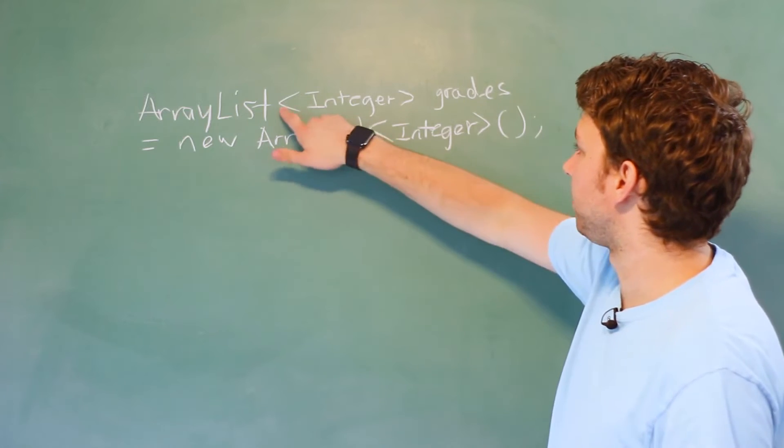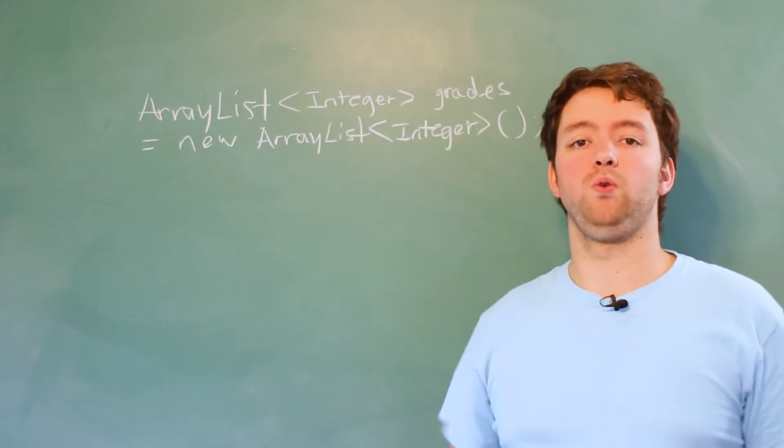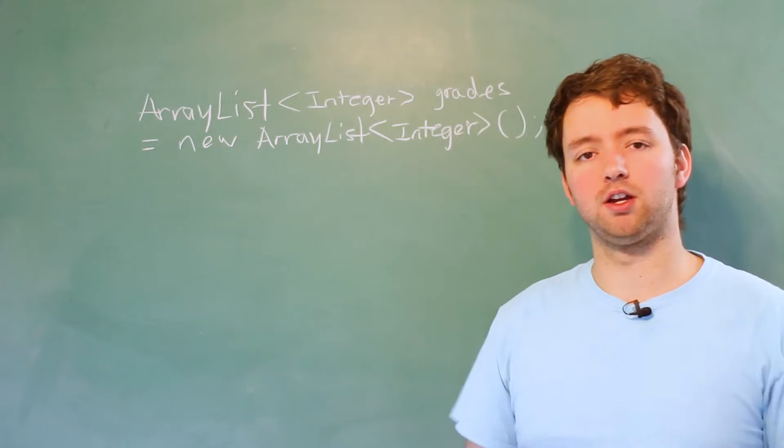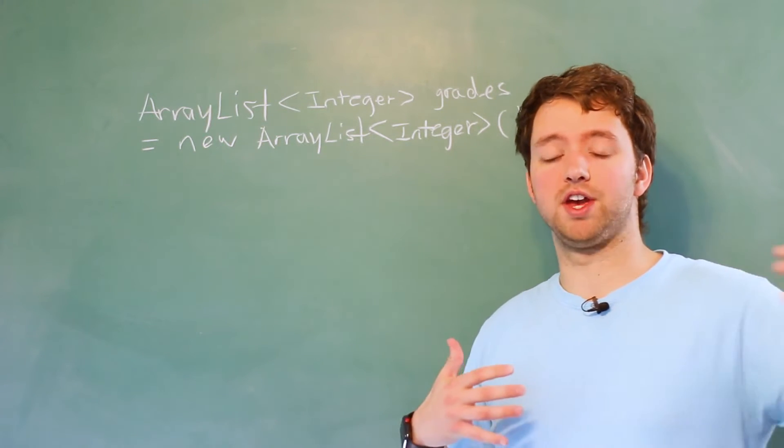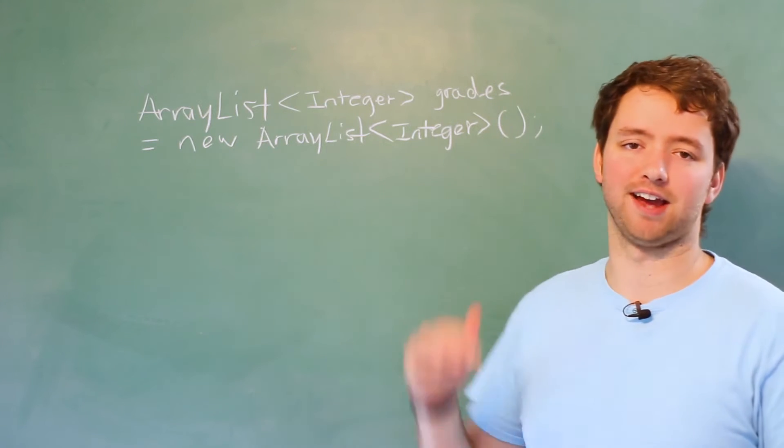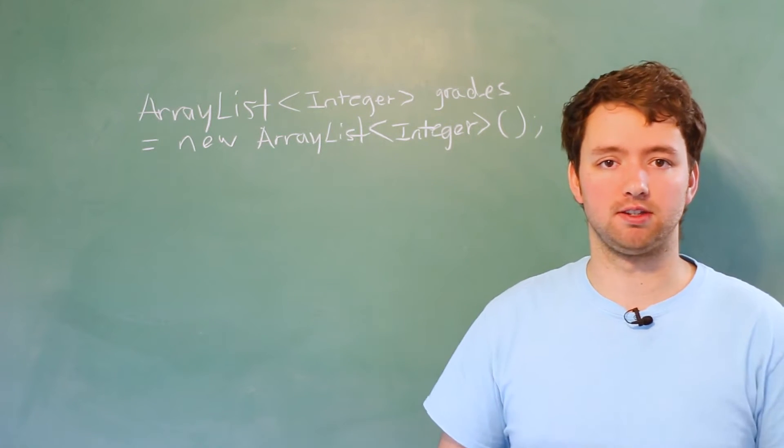First, let's talk about the less than, greater than sign. So whenever you see this, it's what's known as a generic. So generic programming allows you to basically create a class that can work with various types. That's the syntax. We'll probably get into that later on in this series.